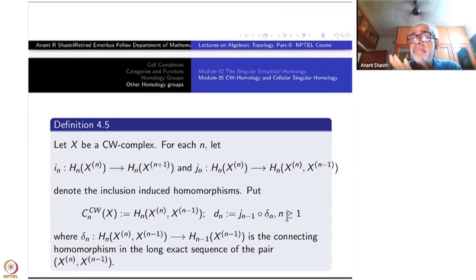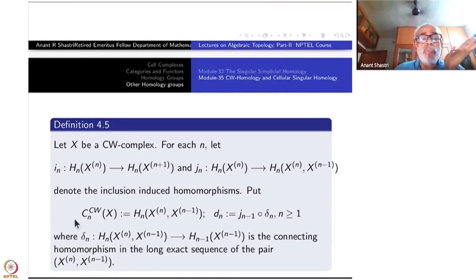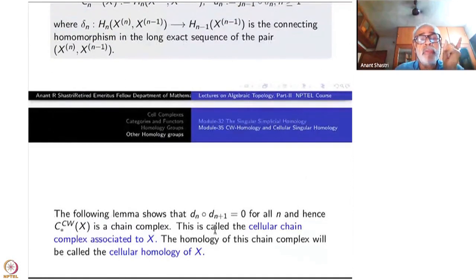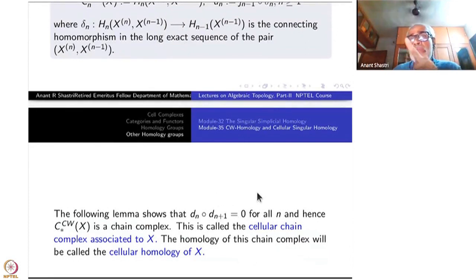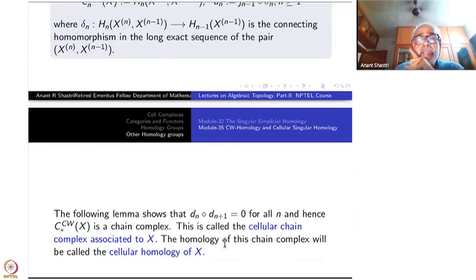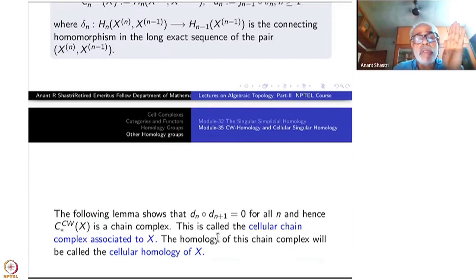We have to verify that DN composed with DN-1 is 0, i.e., D² = 0. Once we do that, this will be a chain complex. The following lemma establishes DN composed with DN+1 equals 0 for all N, and hence this becomes a chain complex, which will be called the cellular chain complex associated to X, written CW(X). The homology of this chain complex will be called the cellular homology of X.